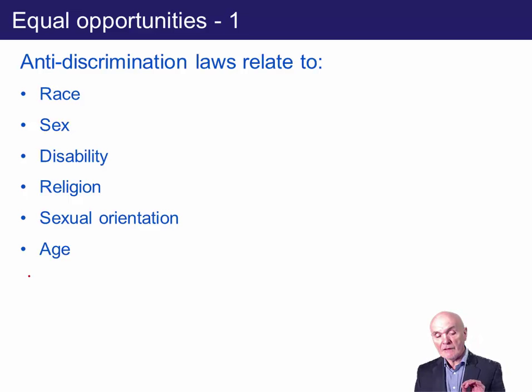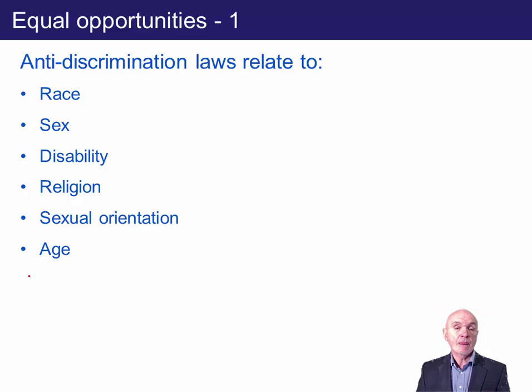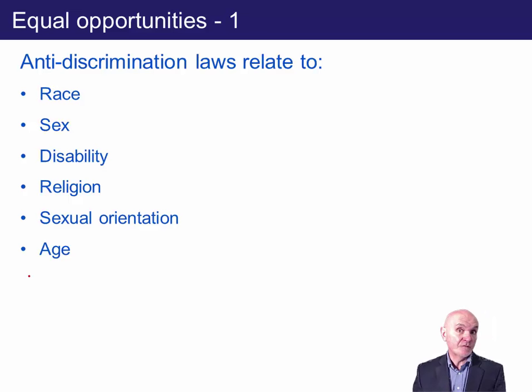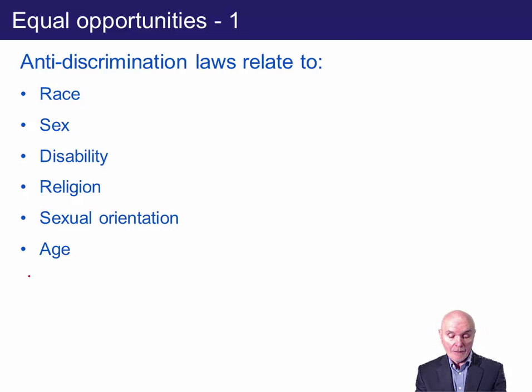We are also not allowed to discriminate on the basis of religion, sexual orientation, or age. Age is probably the last protected characteristic to go into legislation. For example, you can't give a promotion to a 26-year-old over a 60-year-old simply because the younger person might be there for 10 years rather than 5. Although there may be ways to cleverly — and perhaps unfairly — formulate the person specification so that the younger person is favoured.